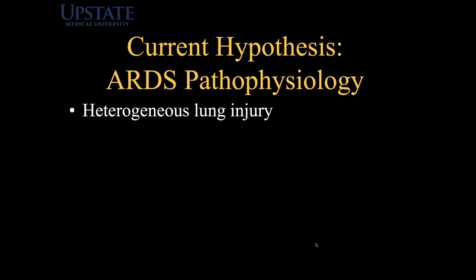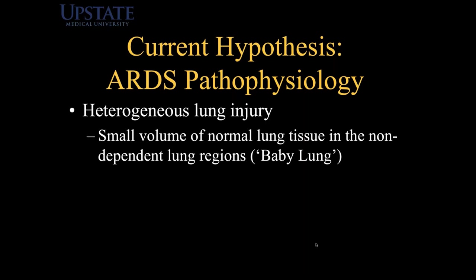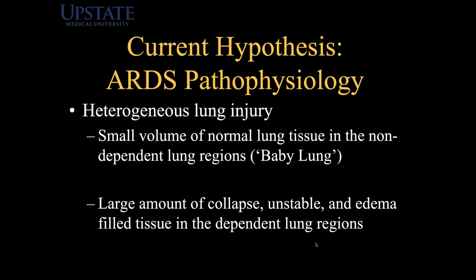What is the current hypothesis of ARDS pathophysiology? We know it's a heterogeneous lung injury. There are areas of instability, edema-filled tissue, collapsed tissue, and areas of perfectly normal healthy tissue. The small volume of remaining healthy tissue, affectionately termed the baby lung by Dr. Gattinoni, is located mostly in the non-dependent region seen on CT or X-ray. There's a large amount of collapsed, unstable, and edema-filled tissue mostly in the dependent region. So really, the current ARDS pathophysiology is felt to be two-fold: normal healthy baby lung in the non-dependent region and a much larger volume of collapsed, unstable, and edema-filled tissue in the dependent regions.